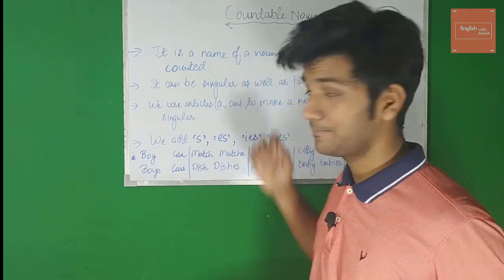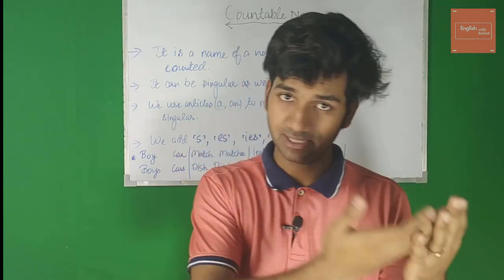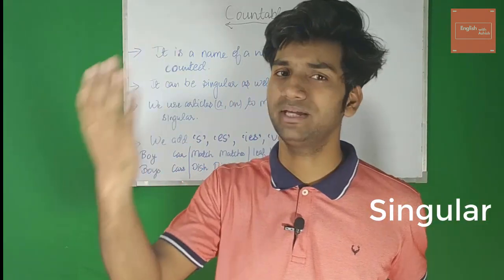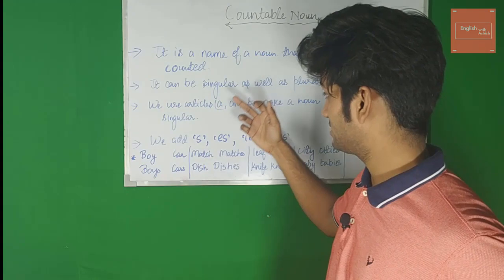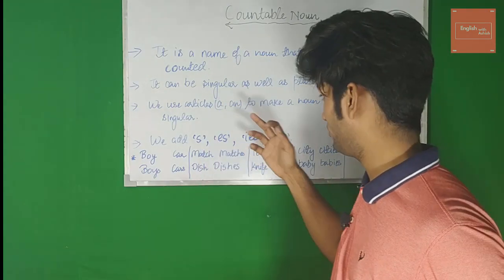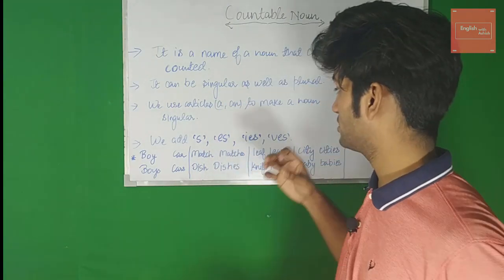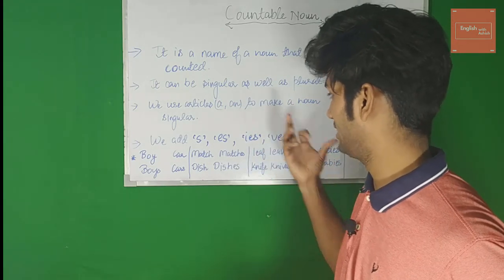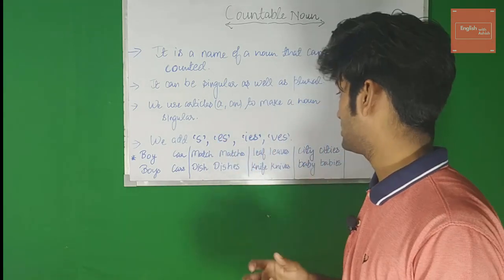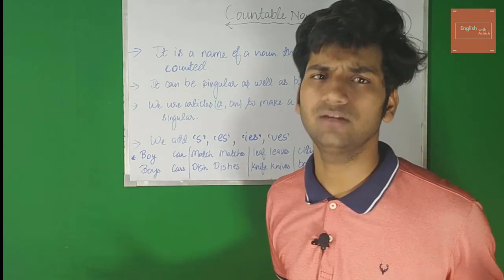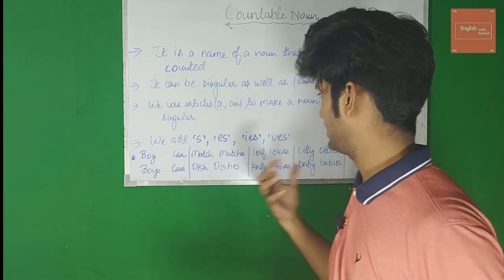When a noun can be counted, we can make it singular and we can make it plural. When we make it singular, we use articles 'a' and 'an' with it. When we make it plural, we use a combination of letters like -s, -es, -ies, -ves at the end of the words. We'll come to this part later on.